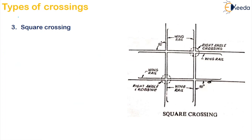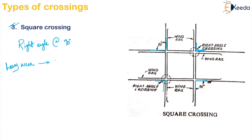The third and last type is your square crossing. Here the crossings are at 90 degrees — the two rails will cross at right angle — also called as right angle crossings. These are not very commonly used because under heavy loads, heavy wear will be caused under your impact or moving loads. That is the reason this type of crossing is not much used on the main lines especially where trains move with very heavy speed. So this is about your crossings, requirements, components and its types.